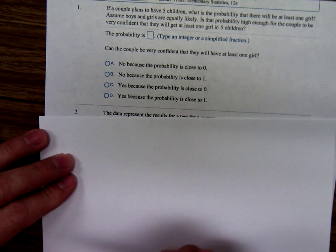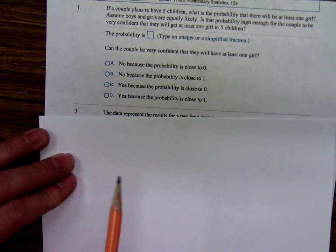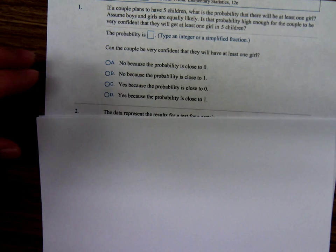Assume boys and girls are equally likely. And after you calculate that probability, he asks, is that probability high enough for the couple to be very confident that they will have at least one girl in five children?